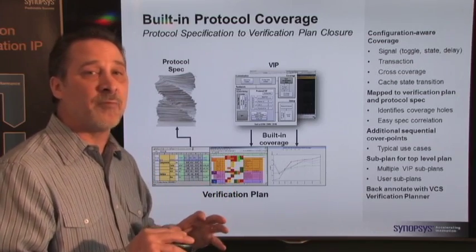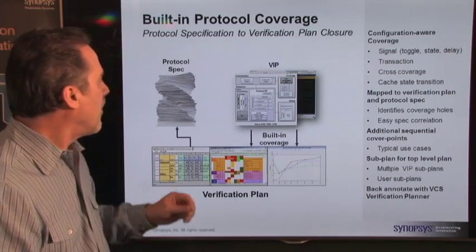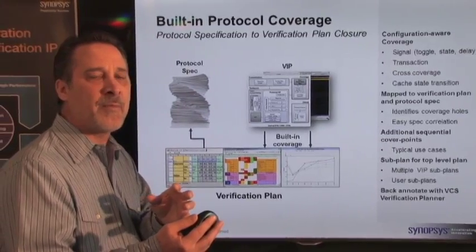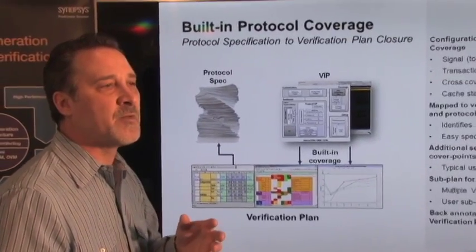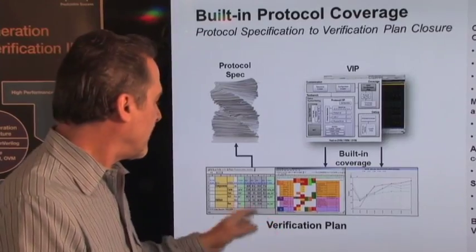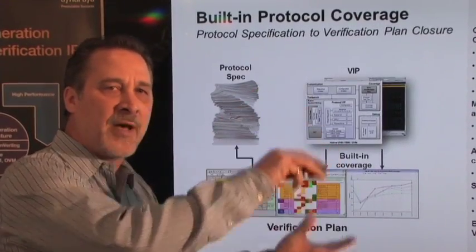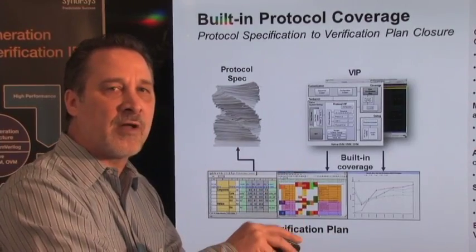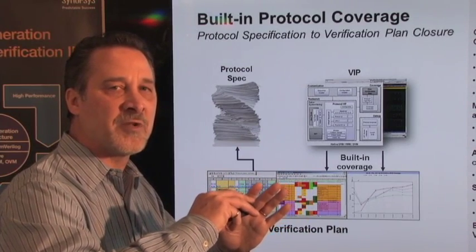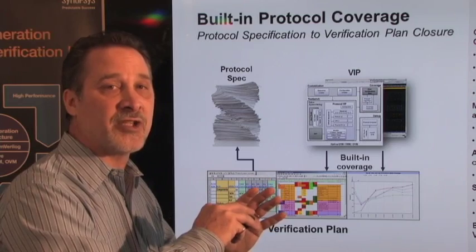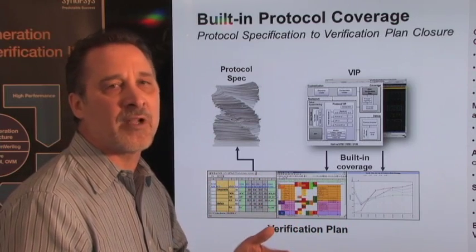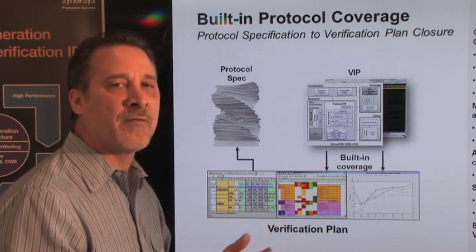That's where a verification plan comes into place. A verification plan maps a protocol spec to a particular functional coverage point. We deliver with our VIP two different things: we deliver an XLS — an Excel file — that's human readable and shows that mapping. Basically you'd have the protocol spec paragraph or section number on the left-hand side and your functional coverage on the right-hand side, so you can relate the functional coverage group to that particular point in the protocol specification. We also deliver an HVP file for use with our Verdi-Q platform and its coverage-based GUI. We supply both formats.